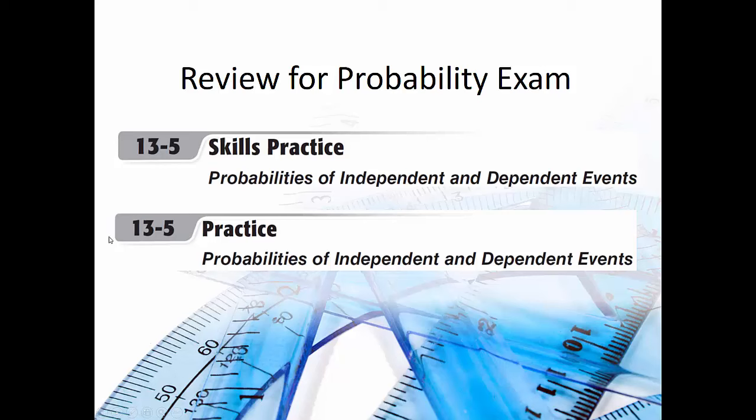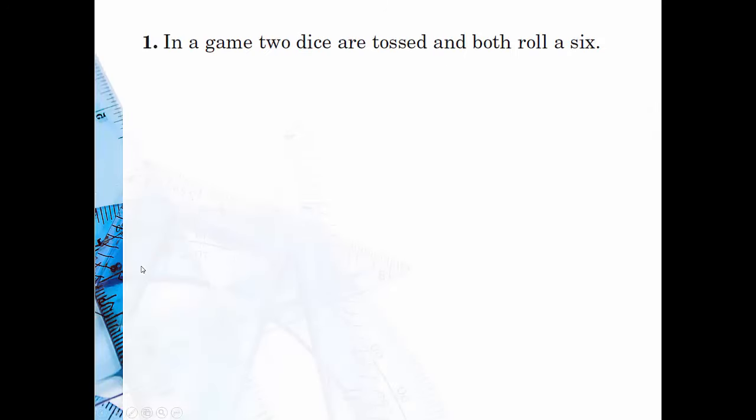Now let's take a look at independent and dependent events. In a game, two dice are tossed and both roll a six. When you're doing two events, you can just multiply both probabilities together. There's one six on a die, so it's a one out of six chance times one out of six for the second die, also getting a six. So it's one out of 36.